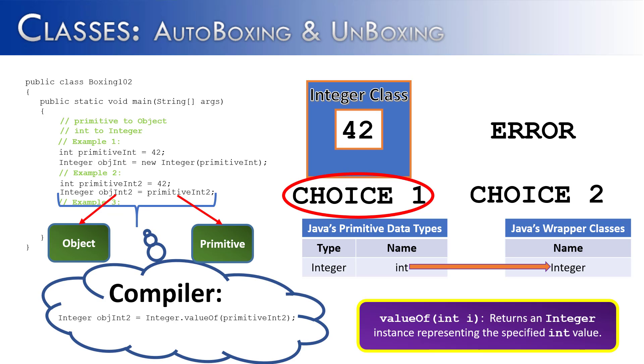What's going to happen behind the scenes is the method valueOf is going to be called on primitive 2 and that is going to convert it from primitive int into an object. The compiler is going to do this and this process of converting between a primitive and an object is called autoboxing.